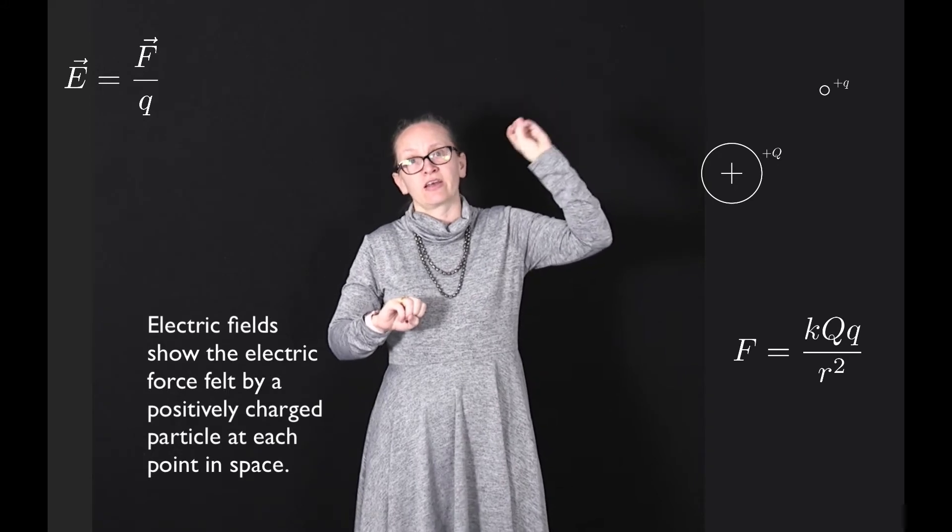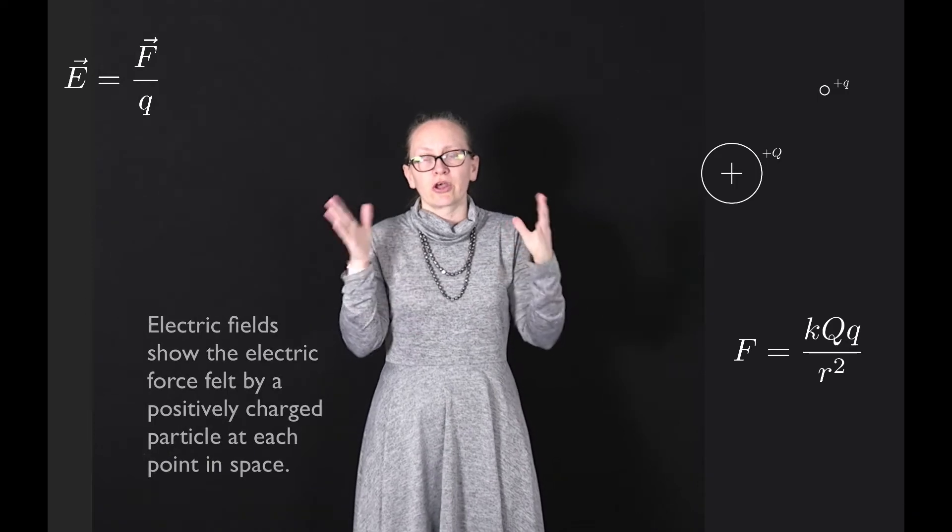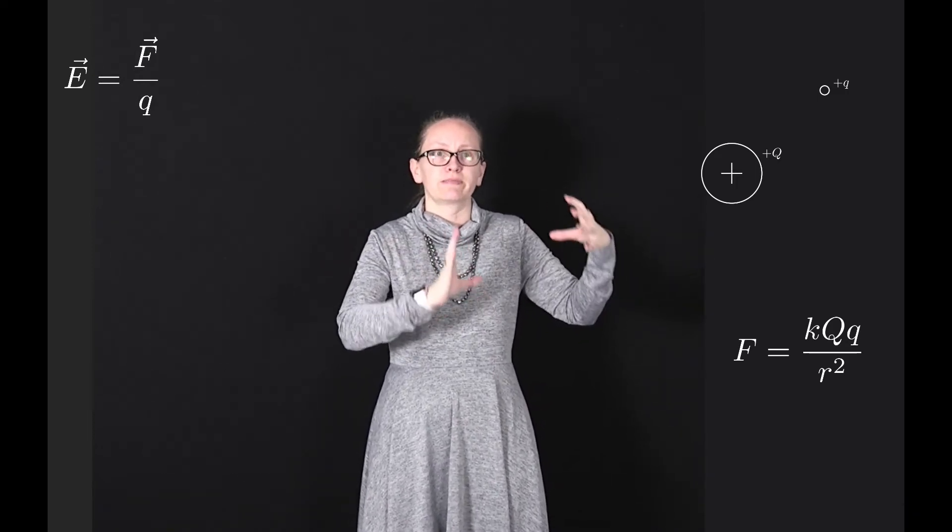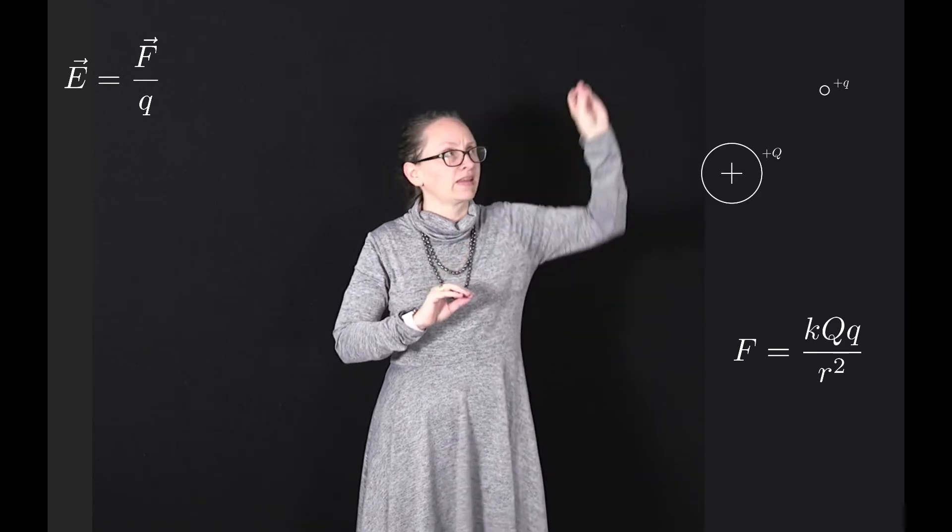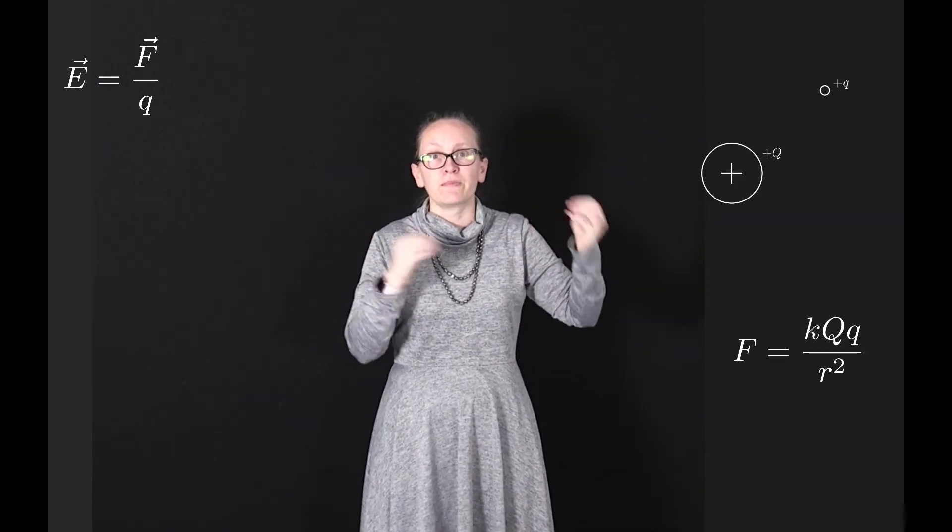So we're just dividing the force felt by the charge on our test particle. In our example we're imagining the field as created by the large Q and that the smaller q is our test particle that we're using to map out that field.